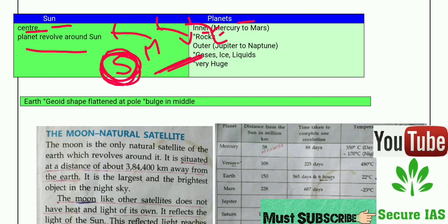From Mercury to Mars, planets are known as inner planets, and from Jupiter to Neptune they are known as outer planets. Inner planets are made of rocks, while outer planets are made of gases, ice, and liquid — and outer planets are very huge.